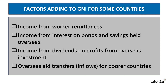Here are some of the key factors adding to GNI for some countries: income from working remittances — money that people earn overseas and send back to the country of origin. They can generate income from interest on bonds and savings held overseas, income from dividends on profits of overseas investments, and also, critically, overseas aid transfers, especially for countries with a low per capita income.